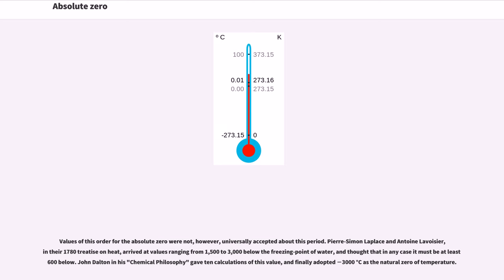Values of this order for the absolute zero were not, however, universally accepted about this period. Pierre-Simon Laplace and Antoine Lavoisier, in their 1780 treatise on heat, arrived at values ranging from 1,500 to 3,000 below the freezing point of water, and thought that in any case it must be at least 600 below. John Dalton in his chemical philosophy gave ten calculations of this value, and finally adopted minus 3,000 degrees Celsius as the natural zero of temperature.